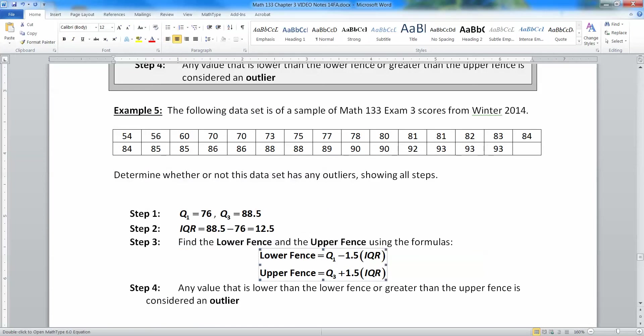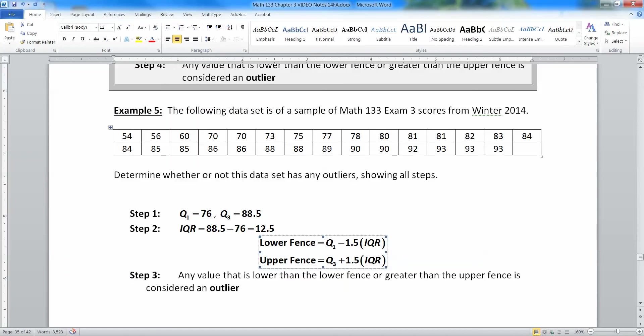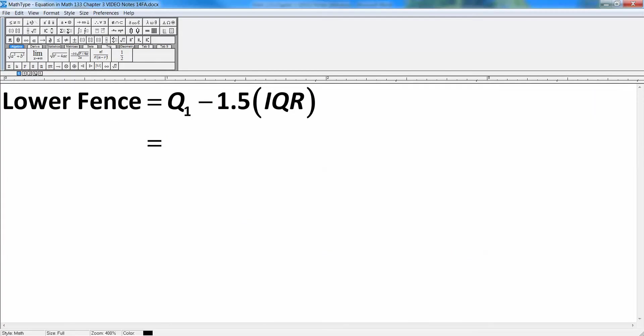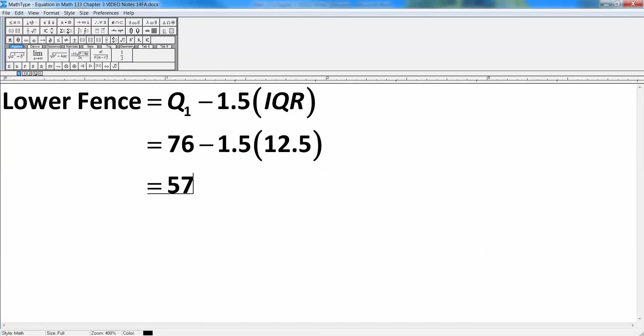Step three, we need to find our lower fence and our upper fence. The lower fence is Q1 minus 1.5 times the IQR. So that would be 76 minus 1.5 times 12.5, which let's go find what that is. 76 minus 1.5 times 12.5 will be 57.25. So that would be equal to 57.25. That's the lower fence right there.